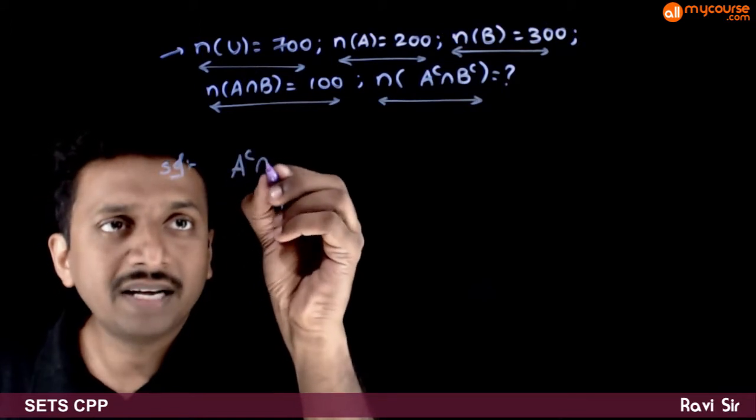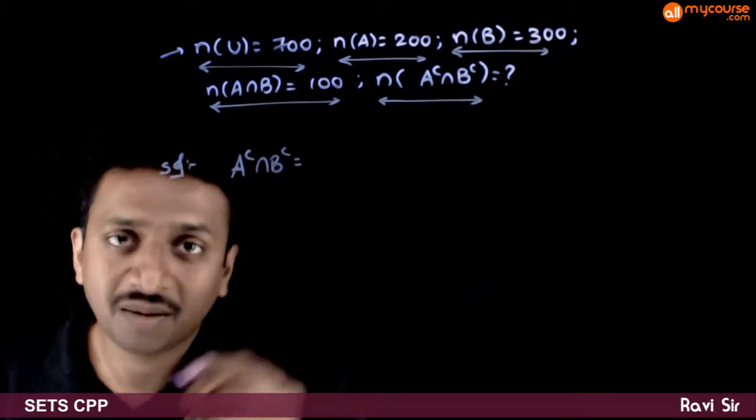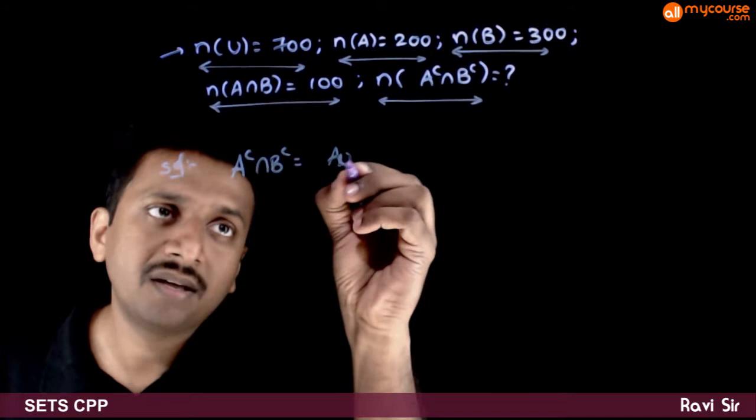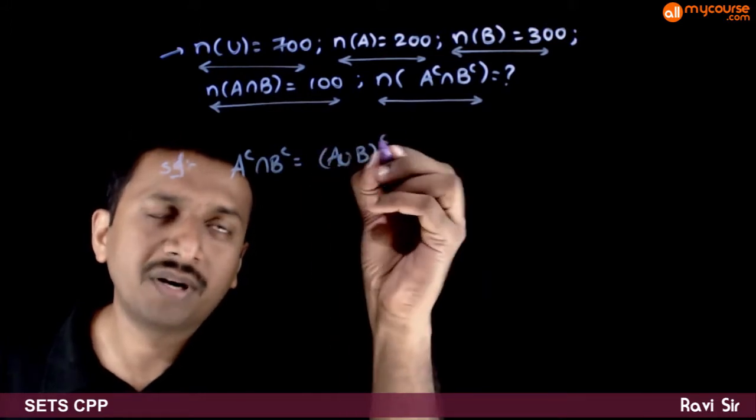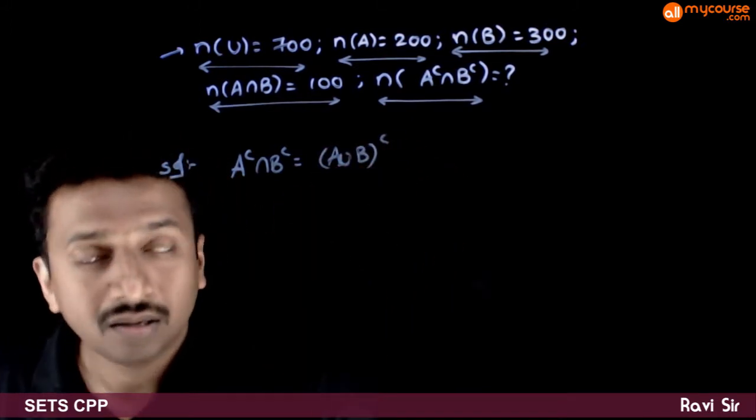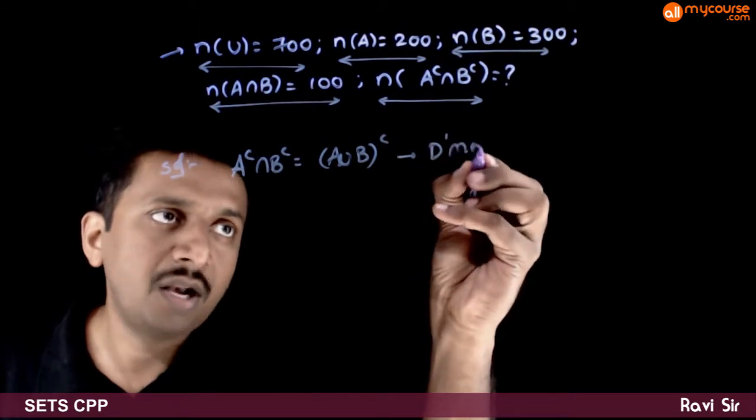This is a very important formula which you need to remember. A complement intersection B complement is nothing but A union B whole complement. What is this formula called? This formula is called De Morgan's law.